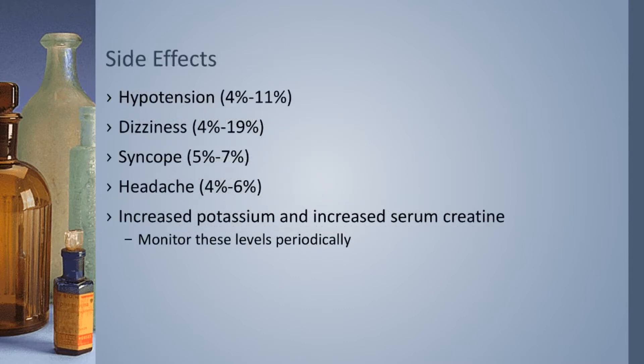Now moving on to side effects of lisinopril. Some more common ones are hypotension or low blood pressure and dizziness, and this is usually more pronounced when you first start lisinopril or increase your dose. Another possible side effect is syncope, or passing out, and this is due to lower blood flow to your brain because of the lower blood pressure. So when you first start taking lisinopril or increase your dose, just be careful when you're standing up or getting out of bed. If you stand up really quickly, you may temporarily lose some blood flow to your brain causing you to get really dizzy or even pass out. So just slowly rise when you stand — sit up for a minute or two first and you can possibly prevent this.